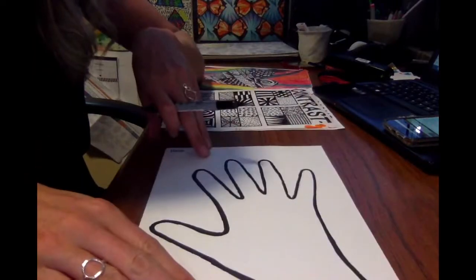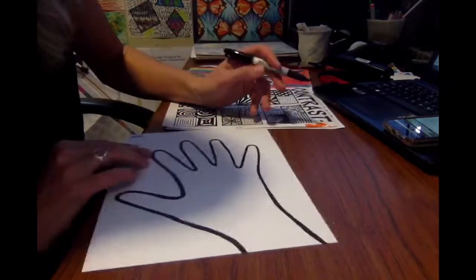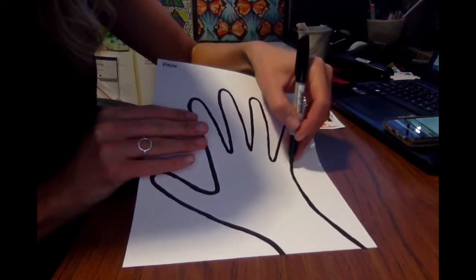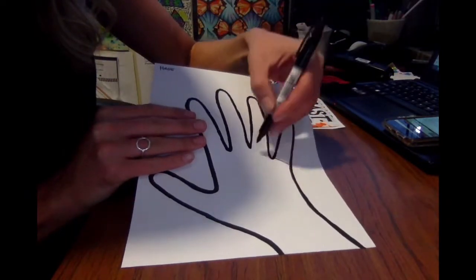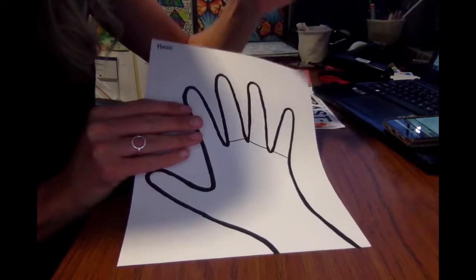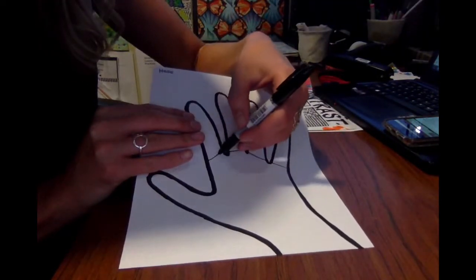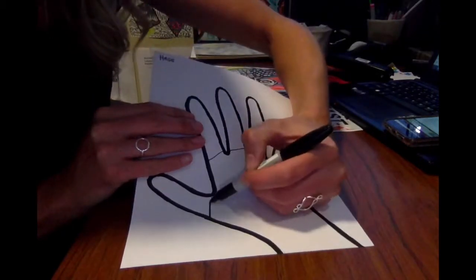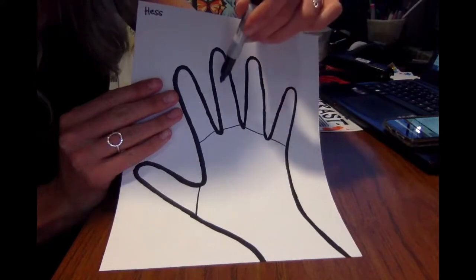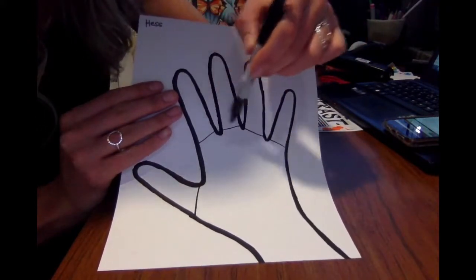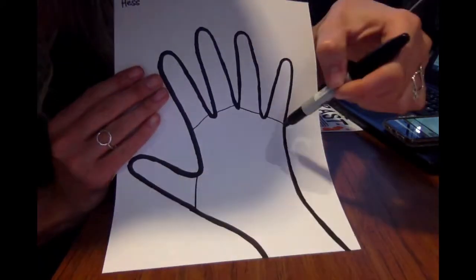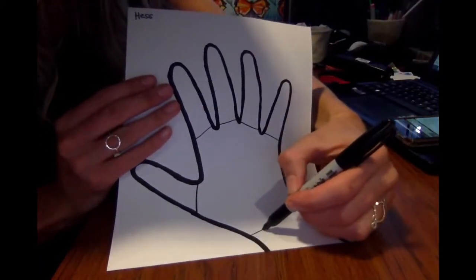Okay, so now this is the part where we need to break up our hand project. So what I'm gonna do first is I'm going to draw a line to kind of section off the fingers. It's kind of like we're cutting the fingers off the hand, but not really. So I'm gonna do a different Zentangle pattern in each finger. I'm just giving myself some guidelines so I know where to stop.